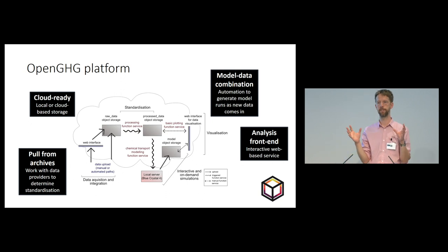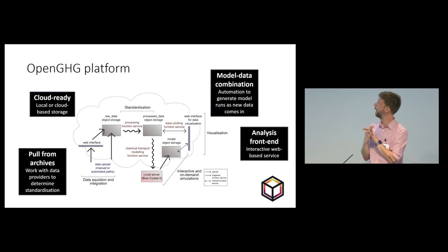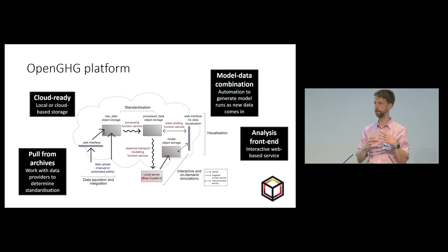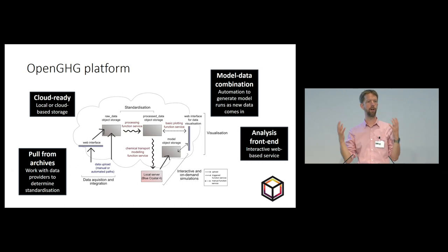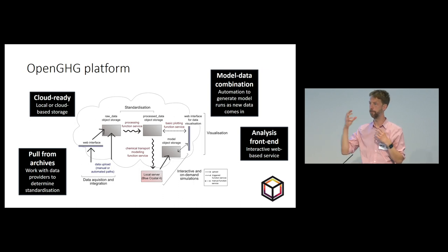We originally started this as a cloud-based software stack sitting on the commercial cloud, and we were going to port it to the Jasmine cloud. We've now made it more flexible — it's a set of software tools that can be used on the cloud but also locally, so researchers can download these tools just for use on their own server or laptop. It's not an archive on its own; we're not trying to replicate CEDA or anything like that. What it is is a set of tools to pull data from public archives, process them into a consistent format, and then do useful things with them.